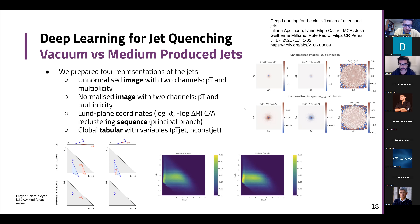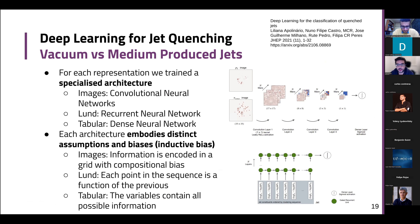This was motivated by our QCD experts. For processing, we have images processed with a convolutional network, Lund plane coordinates processed with a recurrent neural network — which assumes causal dependence between each step of the sequence — and for the tabular data of pT and number of constituents, we use a dense neural network. Each architecture embodies distinct assumptions or inductive biases about the data. The convolutional network has a hierarchical compositional bias from local to global, while the recurrent neural network assumes causal dependence in the sequence.